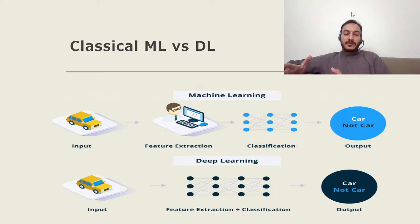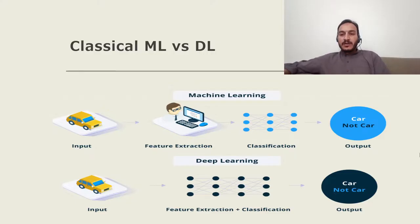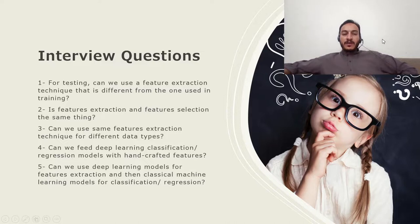The deep learning model will do all the processing for you and train itself after passing the data through different layers. This is a major difference between classical machine learning and deep learning for feature extraction.